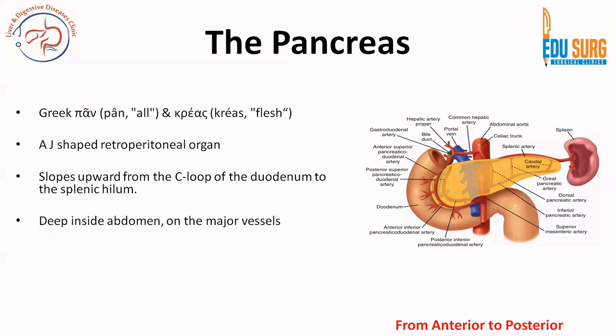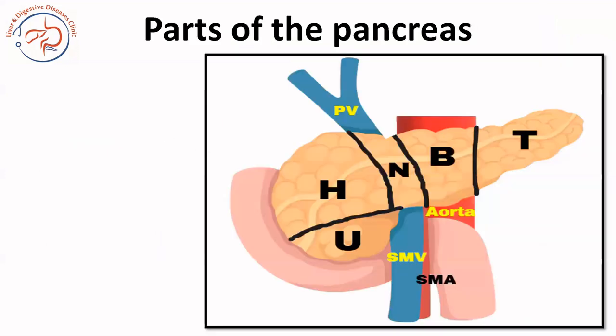The pancreas rests on the major vessels and the vertebra. The vertebral level where the pancreas is related is L1 and L2. The pancreatic neck lies anterior to the vertebral bodies L1 and L2, and between the vertebra and pancreas are only the major vessels: the abdominal aorta, inferior vena cava, portal vein, celiac artery above the pancreas, and the superior mesenteric artery behind the pancreas. So all the major vessels are related intimately to the pancreas.